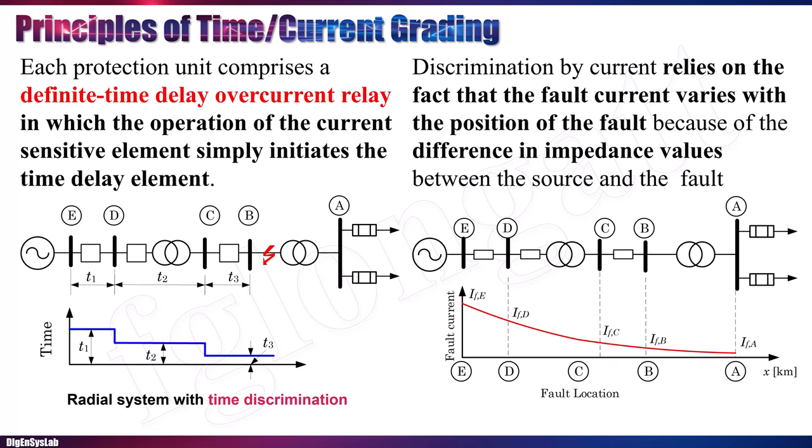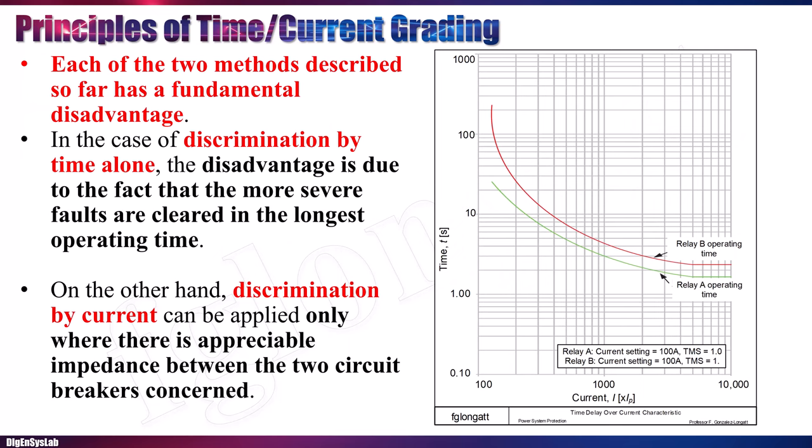The other way is to use short circuit currents. The farther you are from the generation point, the lower the current. The short circuit level at busbar A is very low compared to the short circuit level near generation at point E. We can use the magnitude of the short circuit current to create discrimination. However, in some configurations this becomes difficult because the electrical distances or magnitudes become very small. For that reason, in modern distribution systems we use a combination of time and current grading.